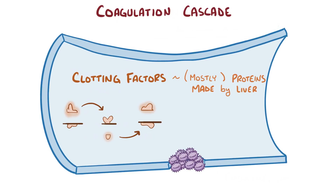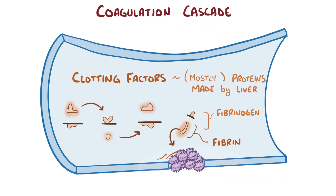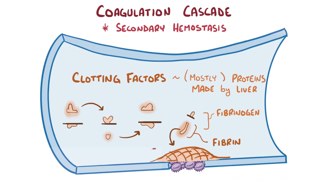The final step is activation of the protein fibrinogen to fibrin, which deposits and polymerizes to form a mesh around the platelets. These steps leading up to the fibrin reinforcement of the platelet plug make up the process called secondary hemostasis, and result in a hard clot at the site of the injury.